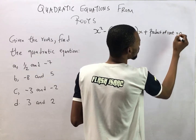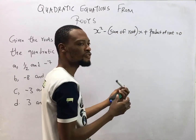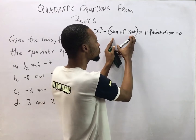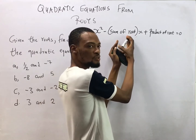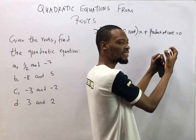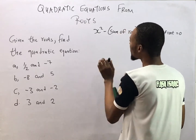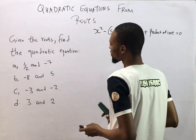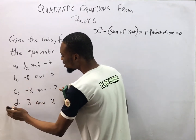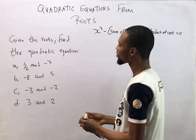That equals zero — that is the formula. The sum of roots means we add the roots; the product of roots means we multiply the roots. Now let's use this concept to answer questions A through D.